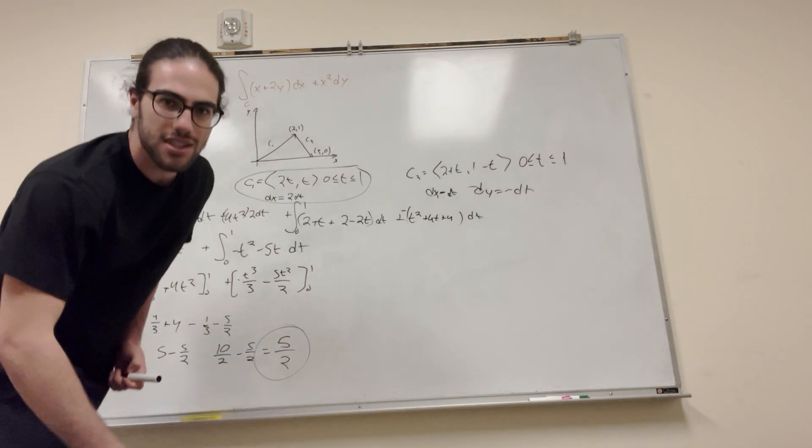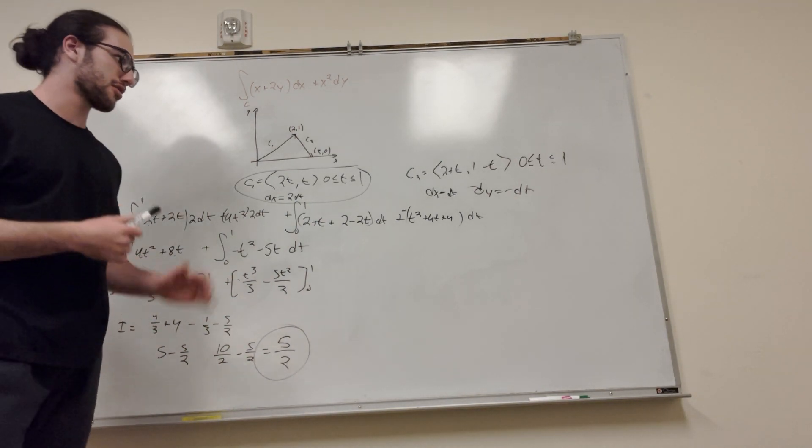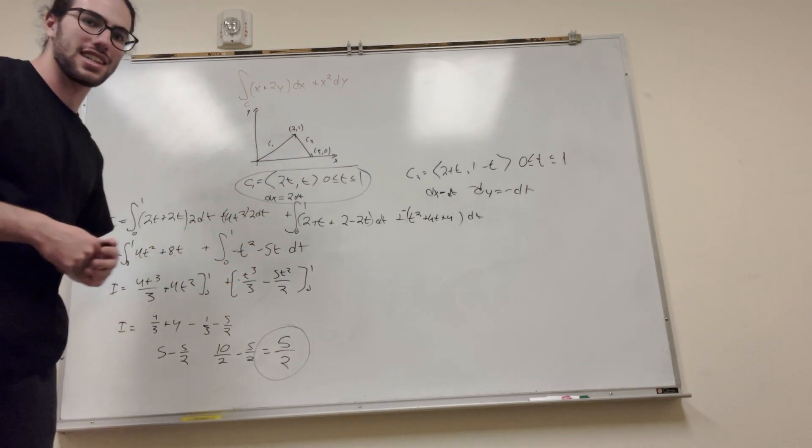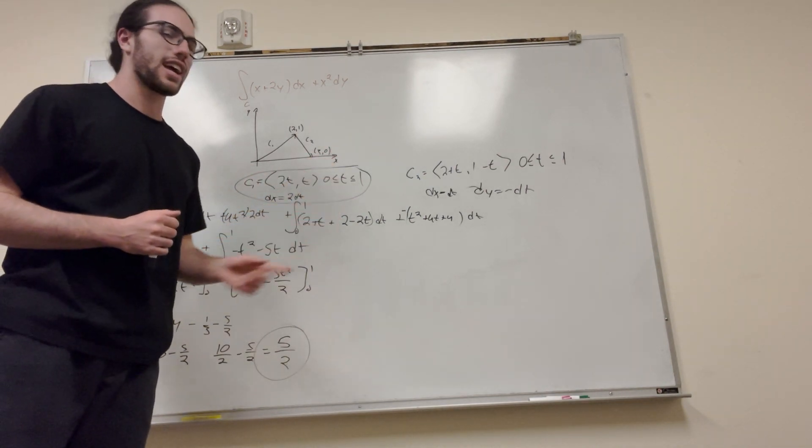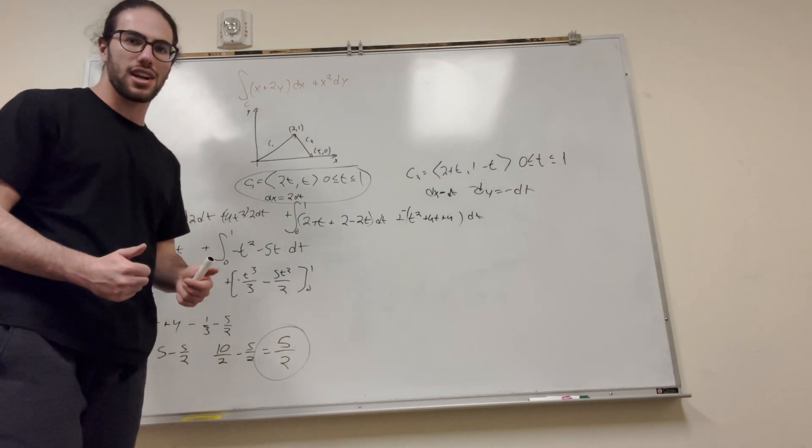So yeah, that's how you solve this problem. Kind of a lot of things to keep track of, but just remember that you have to split your intervals into two. You have to convert dx to dt. Don't forget your constant that comes out of that. If it's negative, don't forget the negative. Yeah, that's how you do it. So good luck on your calc homework.